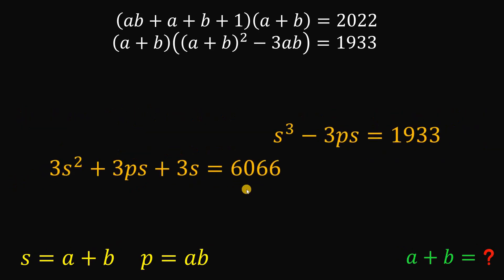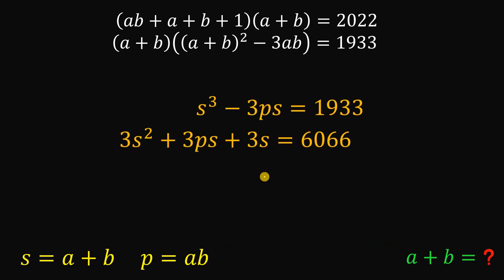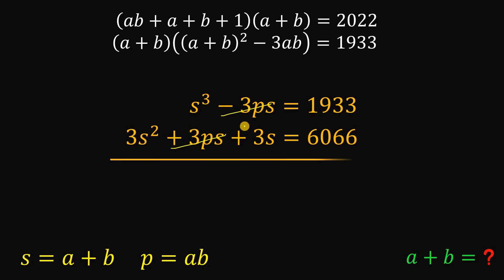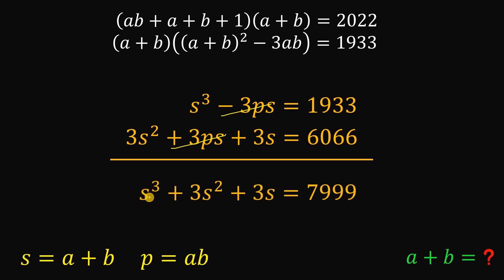Now focusing on these two equations, to eliminate p we add them together. We have -3ps and +3ps, which cancel to zero. Adding the two equations gives s³ + 3s² + 3s = 7999.